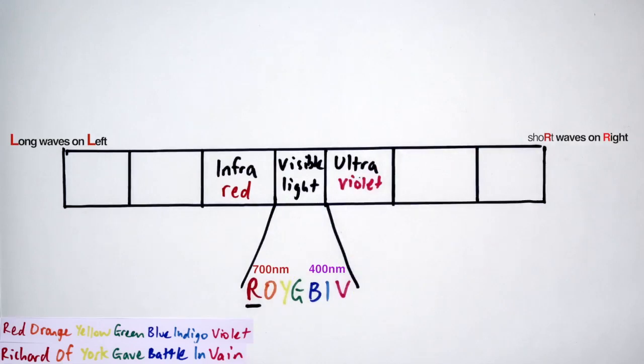The next thing I remember is that R for red, R for radio. Radio is the longest electromagnetic wave. It can be longer than a football field. Because radio is the longest wave, it goes in the box on the far left, where the waves are the longest.